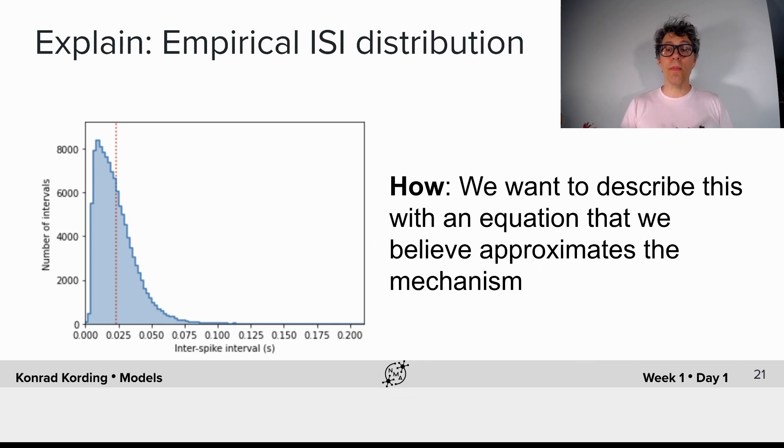And we want to build a how model. We want to describe this with an equation that we believe approximates the mechanism that is really active in the brain. We want to make statements about how the brain actually works.